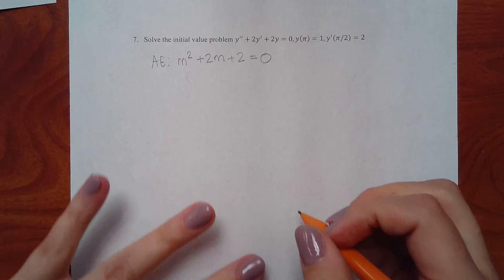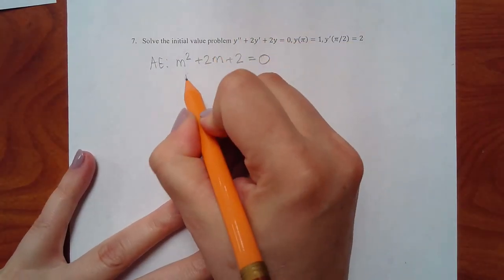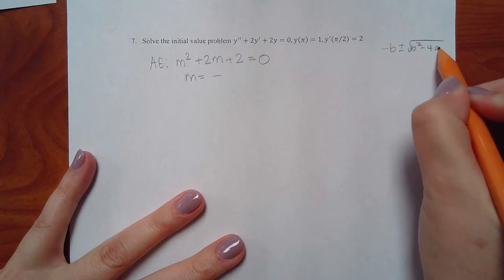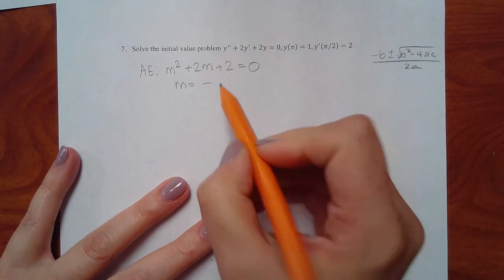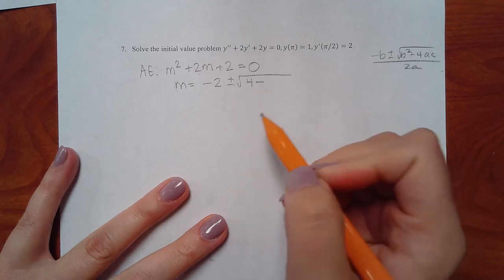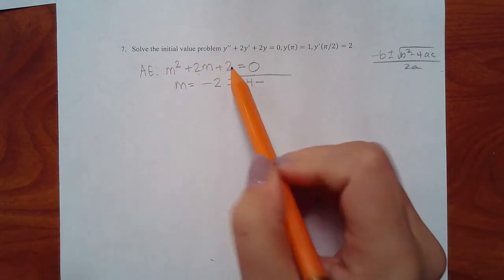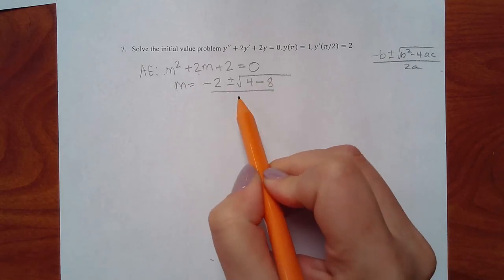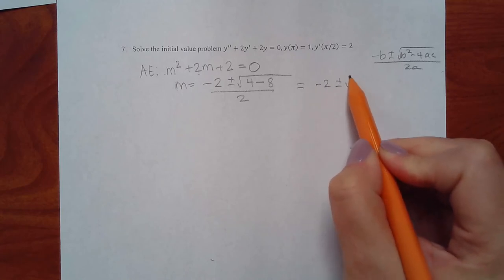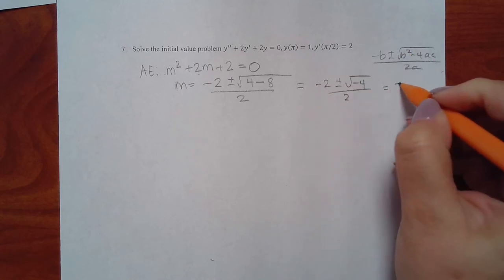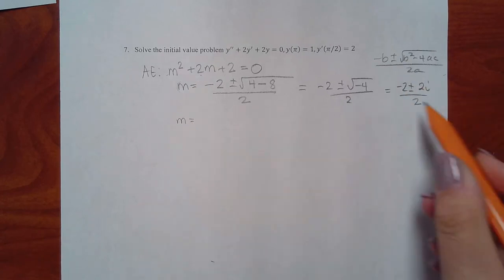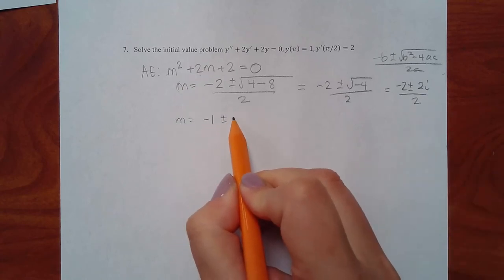Plugging in: negative 2 plus or minus square root of 4 minus 8, all over 2. We get negative 4 under the radical, which gives 2i. Dividing through: m equals negative 1 plus or minus i. This is the complex conjugate case. The formulas require identifying alpha and beta from alpha plus beta·i. Here alpha equals negative 1 and beta equals 1.